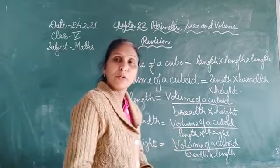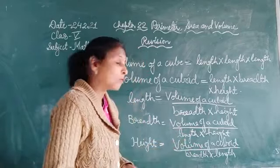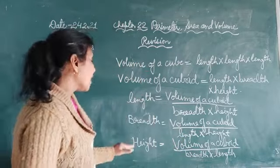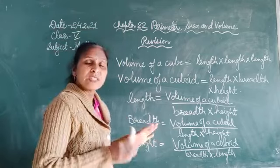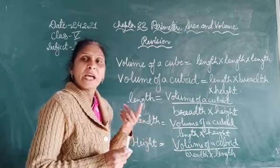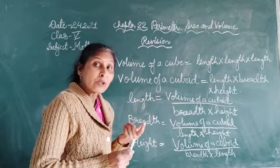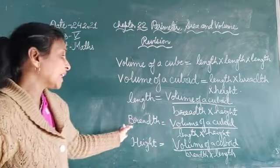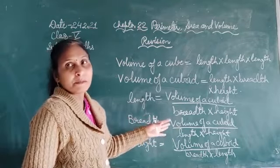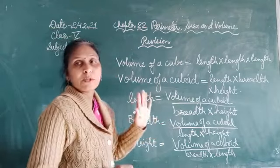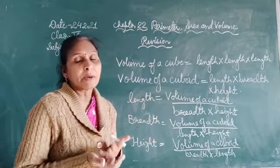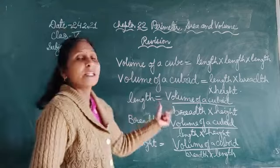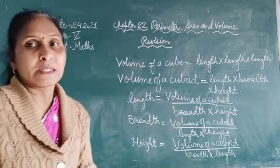If volume and length are given, we can find the height. The unit is straightforward — if the length is given in meters, the answer will also be in meters. The unit of the answer will depend on the units given in the problem.